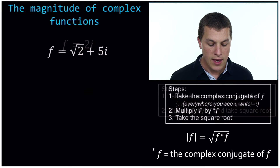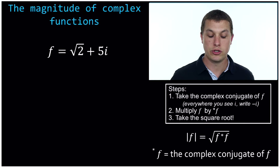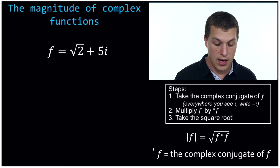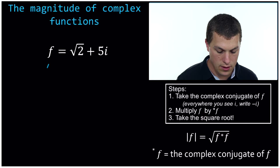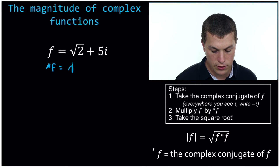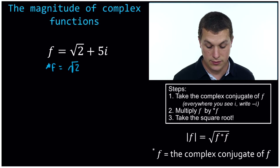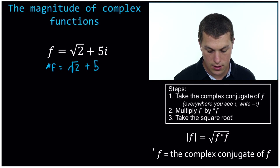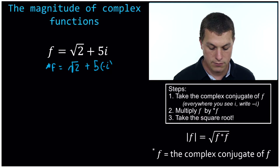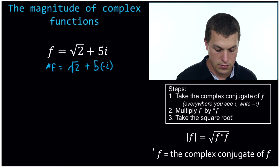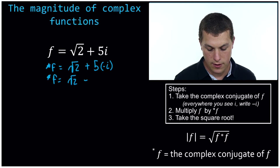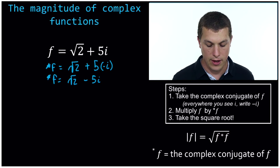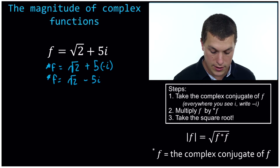Let's do another example. Here I have f is equal to the square root of 2 plus 5i. Again, the first step is the same — I'm just going to take the complex conjugate. That means f-star is square root of 2 — there's no i in that part, so I just leave it the same — plus 5, and now I see an i there, so I put negative i. That's taking the complex conjugate, so we get square root of 2 minus 5i. Now let's go ahead and take the magnitude.